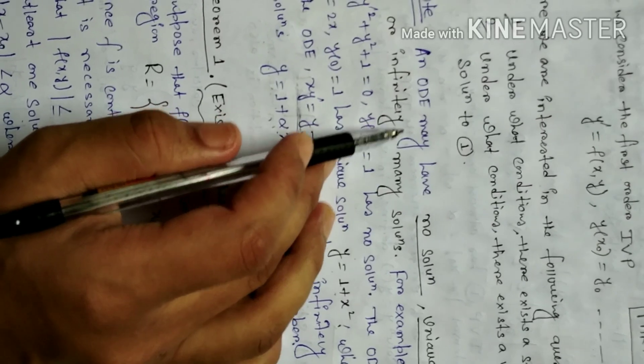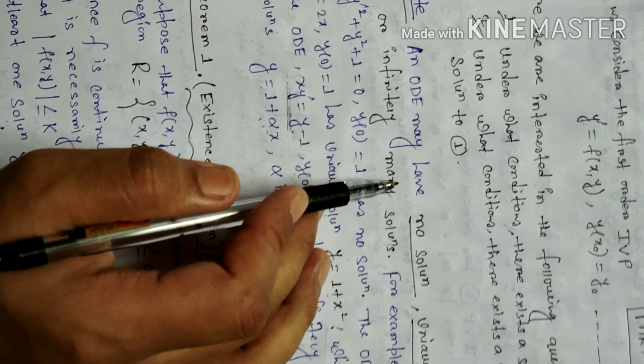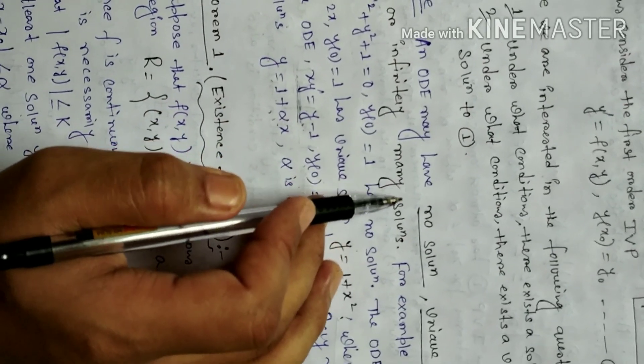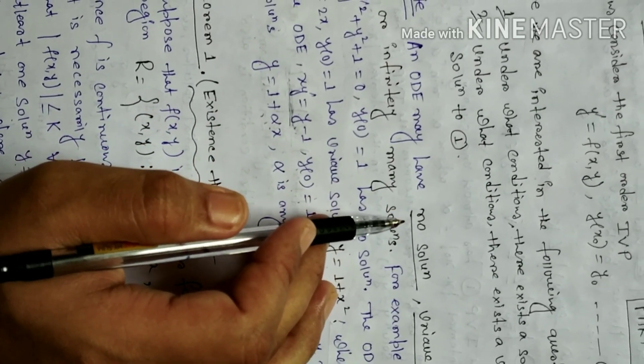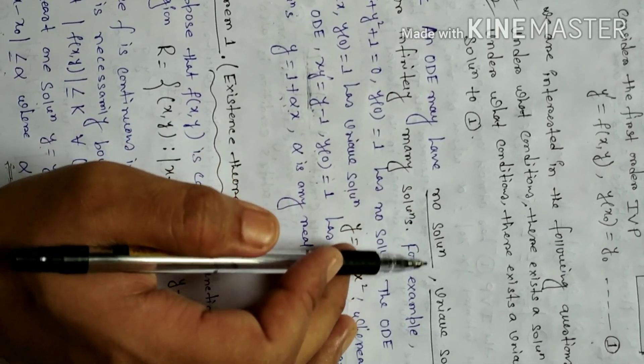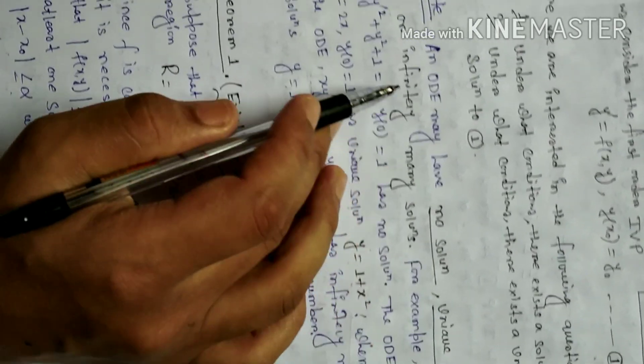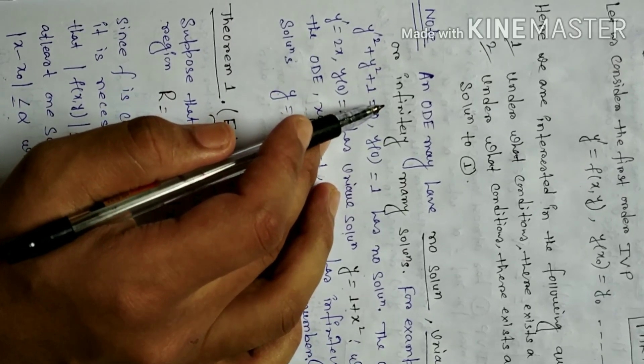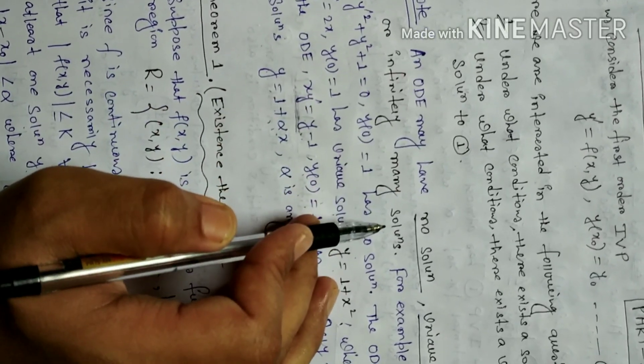From ODE theory we know that there are three types of solutions: number 1, no solution; number 2, unique solution; and number 3, infinitely many solutions.